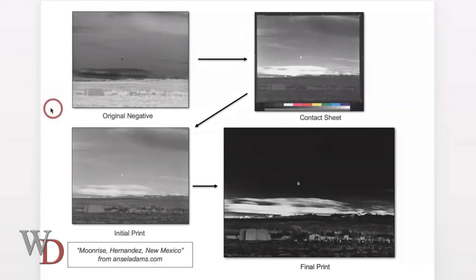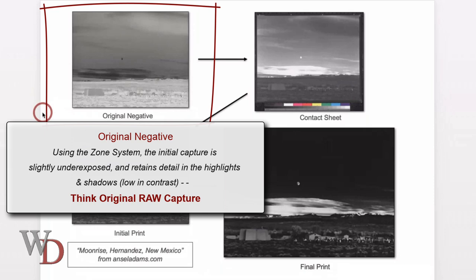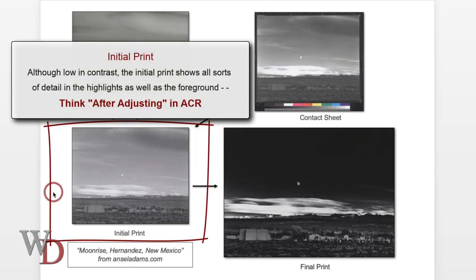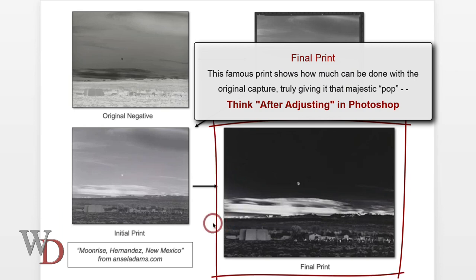Looking at four images: the original negative using the Zone System is slightly underexposed, retaining detail in highlights and shadows, low in contrast — think original RAW capture. The contact sheet reveals the low-contrast nature of the original capture — think first look in ACR. The initial print, though low in contrast, shows all sorts of detail in the highlights and foreground — think after adjusting in ACR. And the final famous print shows how much can be done with the original capture, giving it that majestic pop — think after adjusting in Photoshop.